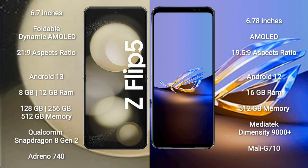The Samsung Galaxy Z Flip 5 runs on Android 13, while the Asus ROG Phone 6D Ultimate runs on Android 12. The Samsung Galaxy Z Flip 5 comes with 8GB or 12GB RAM and 128GB, 256GB, or 512GB internal storage, powered by the Qualcomm Snapdragon 8 Gen 2 processor and Adreno 740 GPU.